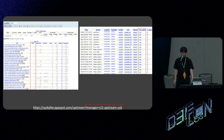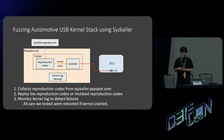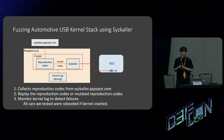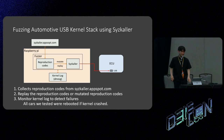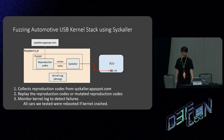This is the overview of fuzzing the USB kernel stack in the car. It's very simple: collect the reproduction codes from syzkaller.appspot.com, then replay the codes. We can also mutate the data part of the reproduction codes, but we can find vulnerabilities using just the original codes. For kernel fuzzing, we also monitor the dmesg log to detect failures. All cars we tested were rebooted if the kernel crashed, so the fuzzer can detect all failures using this method.